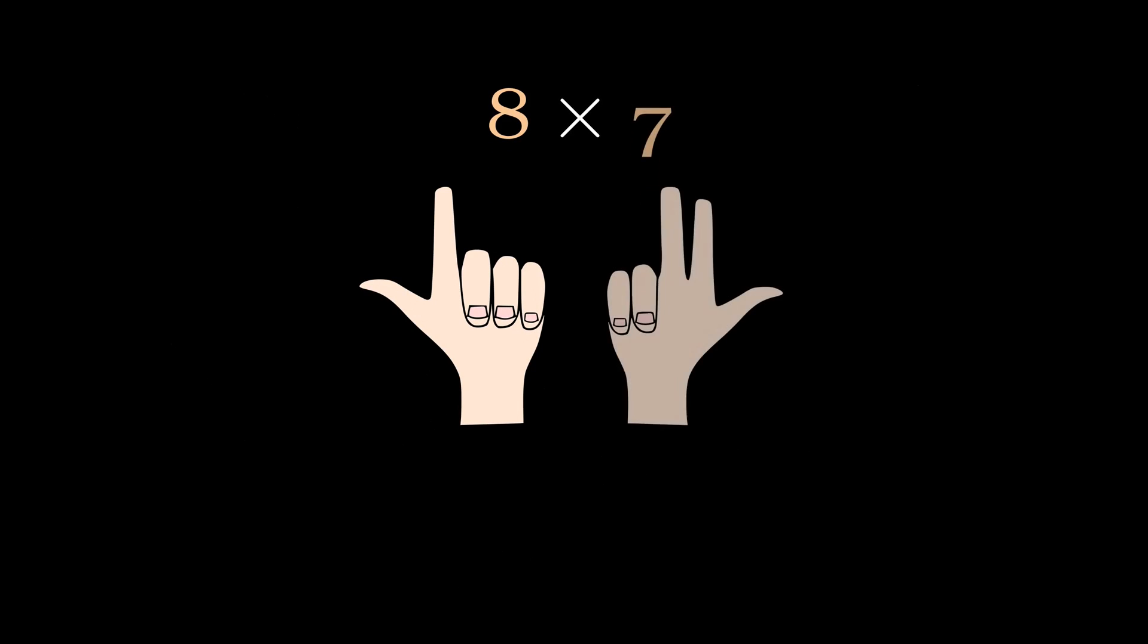Let's see how this trick plays out in case of 8 times 7. Here, we hold 5 fingers down, therefore, 8 times 7 should be at least 50 so far.